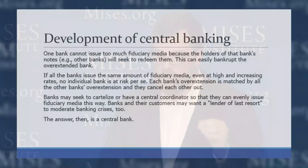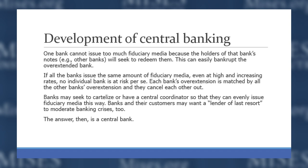However, if all of the banks issued the same amount of fiduciary media at the same rate — even at high and increasing rates — no individual bank is at risk. Each bank's overextension is matched by all the others', so at the clearinghouse it cancels out. There's not a problem for any one individual bank — there's a problem for the banking system as a whole, but the individual bank is okay because all its competitors have issued fiduciary media at the same rate.